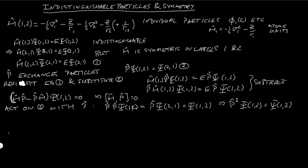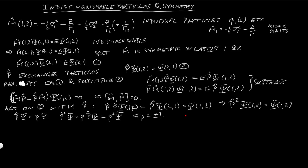Let's consider what happens if I act with p-hat on one of its eigenstates. Assuming psi is an eigenstate with eigenvalue little-p, then p-hat·psi = p·psi. Acting twice: p-hat-squared·psi = p·(p-hat·psi) = p²·psi. Therefore p equals plus or minus 1. So once we find the eigenstates of this exchange operator p-hat, they will have eigenvalues of plus or minus 1, corresponding to symmetric and anti-symmetric states, just as we had with the singlet and triplet operators.